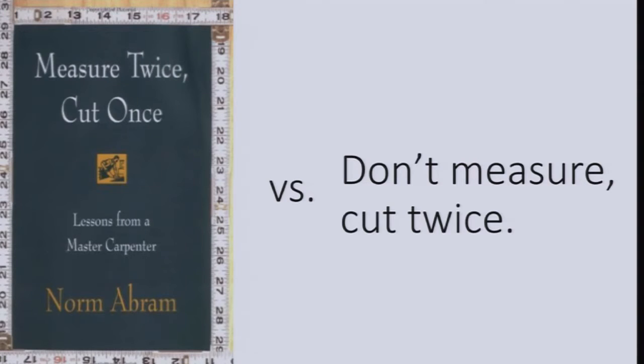Norm Abram from PBS wrote a book with the famous phrase 'measure twice and cut once.' The assumption is that you know how long the board should be. If you know the correct length, by all means measure twice and cut it. But the more interesting problems are where you don't know what the right length of the board is — and you should not measure. Just cut a board, see how it works, and cut another. Boards are generally cheap. Just keep cutting boards until you have the right board. Maybe you don't want a board in the end. 'Don't measure, cut twice' — that's the better phrase.